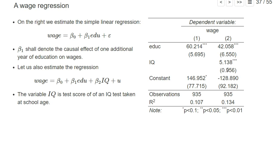Here we see the regression results. If we add the IQ test score as a control variable, we see that higher IQ predicts higher wages, which seems intuitive. We also see that the coefficient in front of the years of education goes down if we add IQ, so that's in line with a simple model where intelligence is the confounder and we can pretty much control for it with the IQ test score.